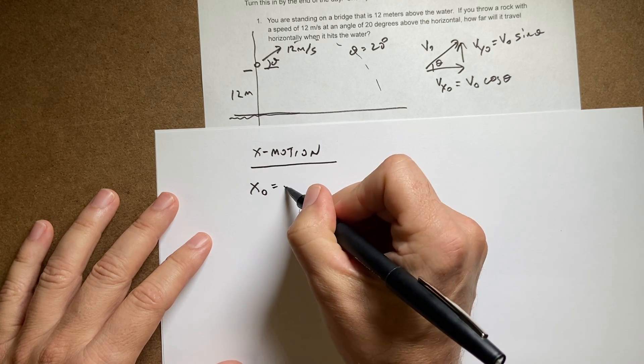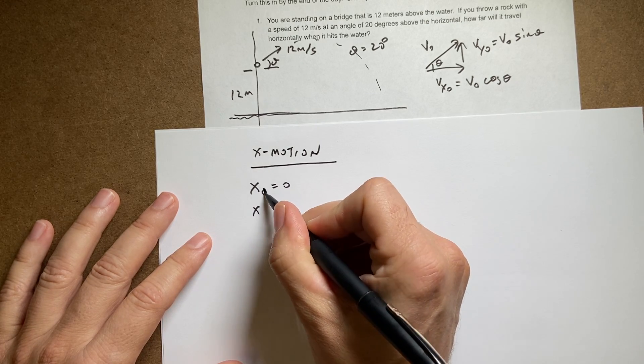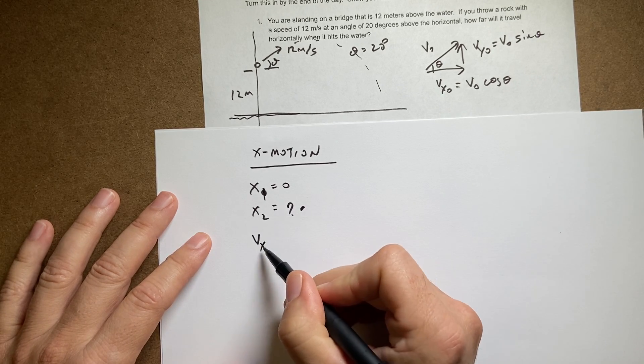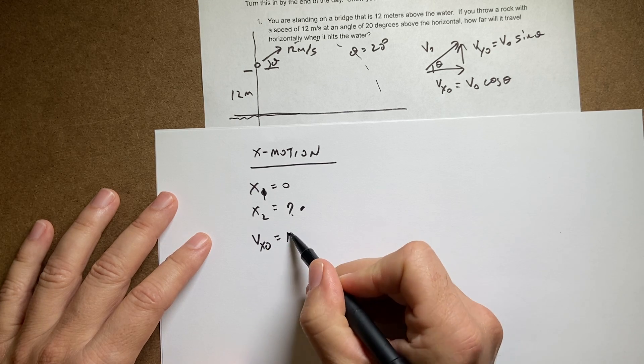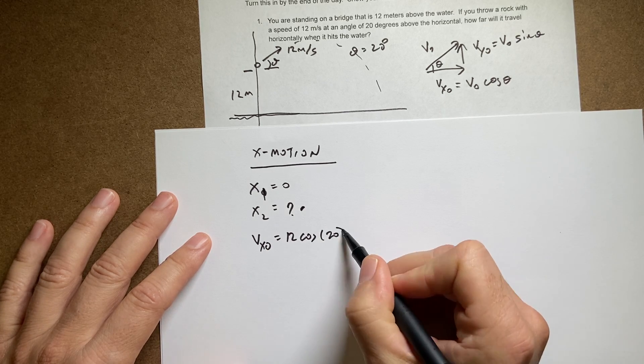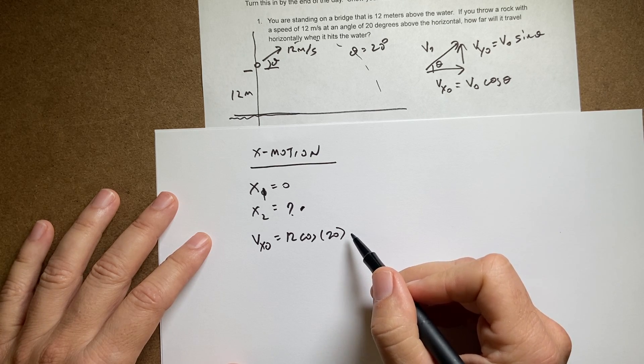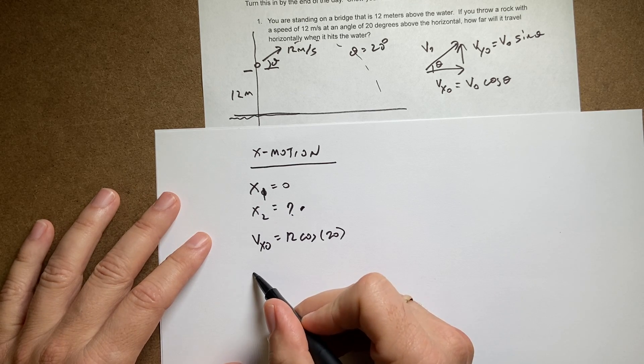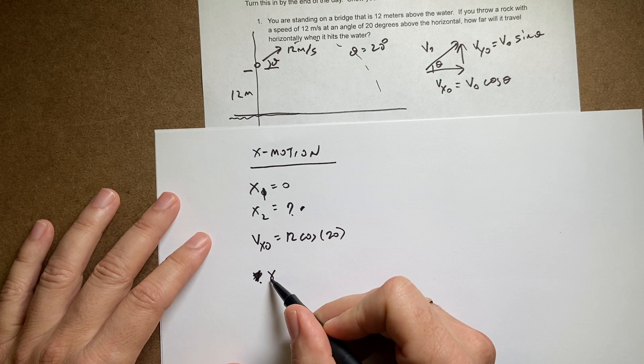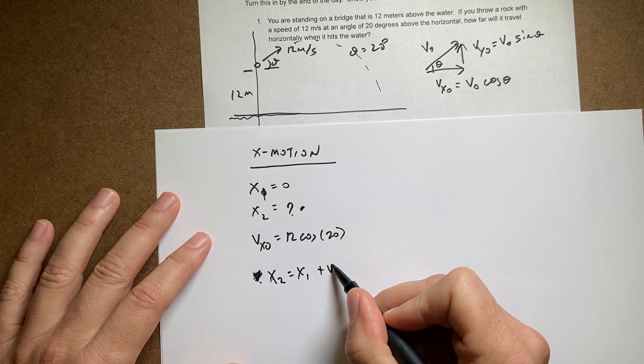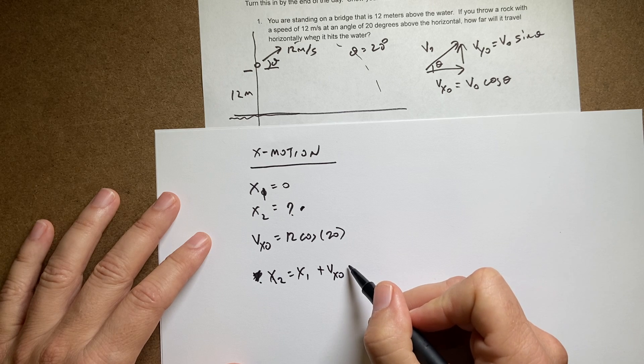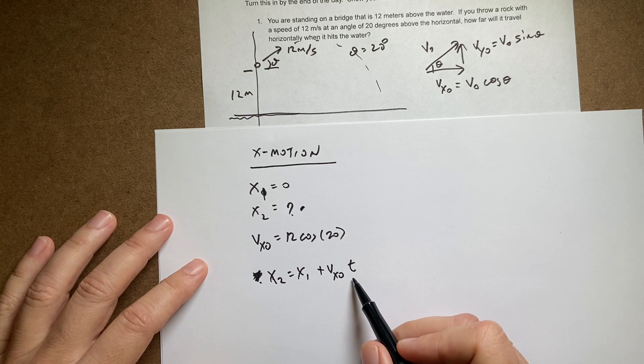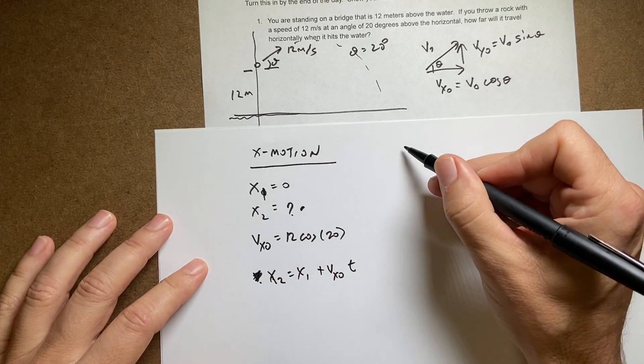The initial x position is zero. The final x position, we don't know. We're looking for that. The initial x velocity is 12 cosine of 20. I can use the definition of average velocity and say x final equals x initial plus v x initial times t, assuming time starts at zero. But I don't know time. If I knew time, I could find the final position. So now we're going to go to the y motion.